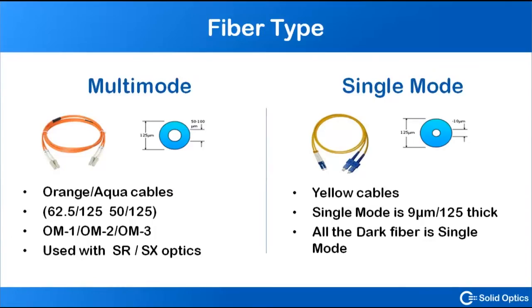In general you've got two different types of glass fiber: multi-mode and single-mode. The multi-mode are orange cables, orange or aqua bluish cables. On the cable itself you can see there's written 62.5/125 or 50/125, or OM1, OM2, OM3. Those are multi-mode standards. You can use these cables with SR or SX optics.